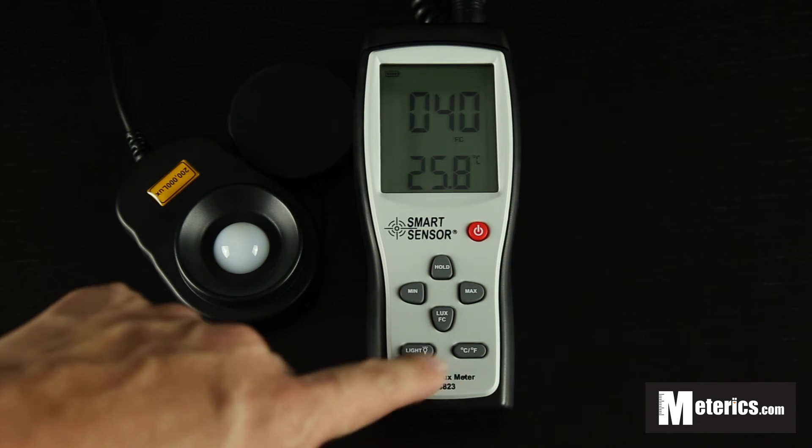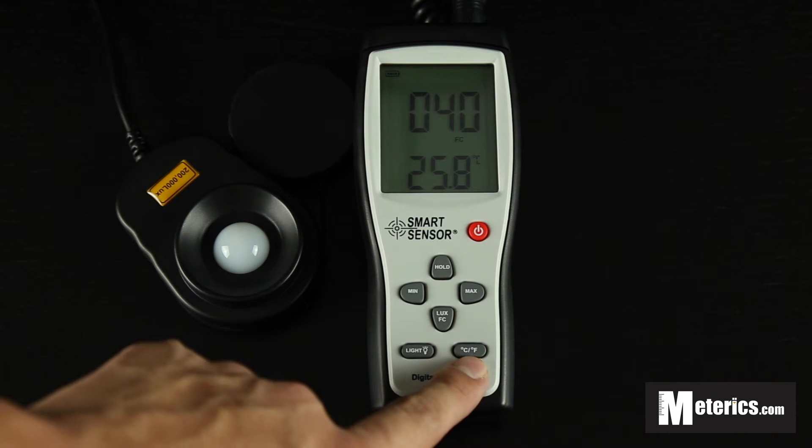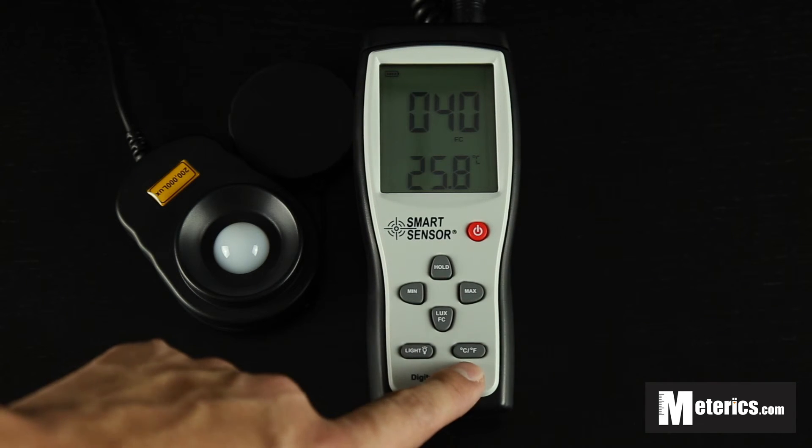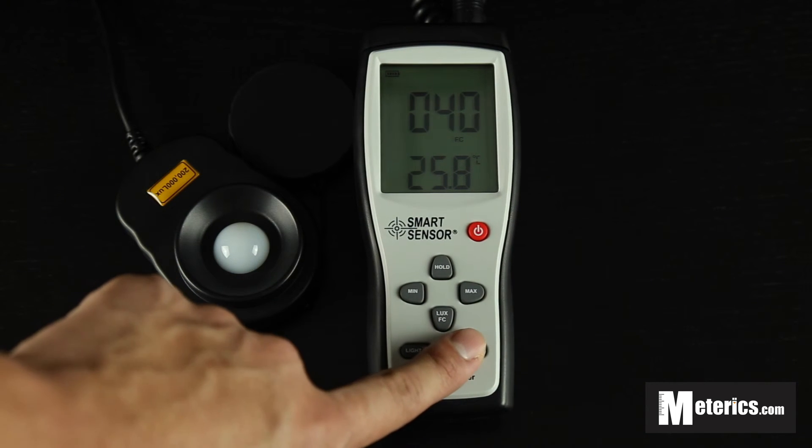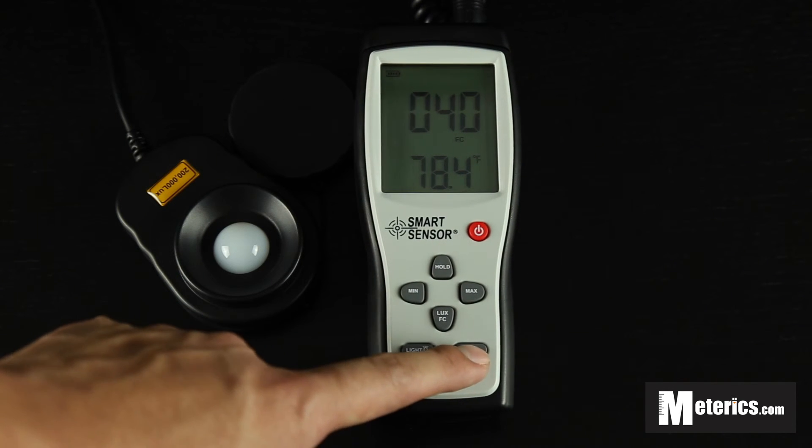The last two buttons here are very straightforward. This one says Celsius and Fahrenheit. This is basically the unit button for the temperature. Depending on if you prefer Celsius or Fahrenheit, you just press that to switch between those two.